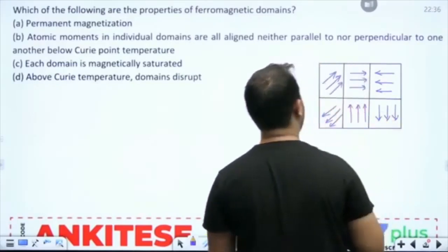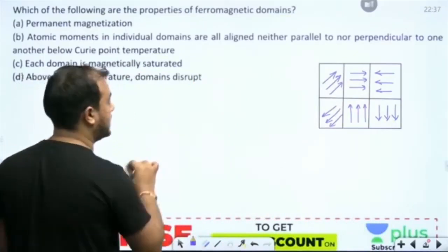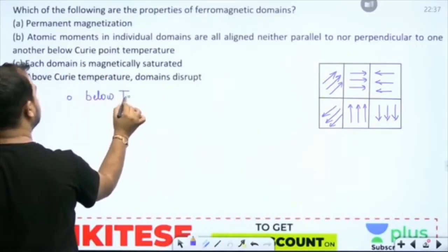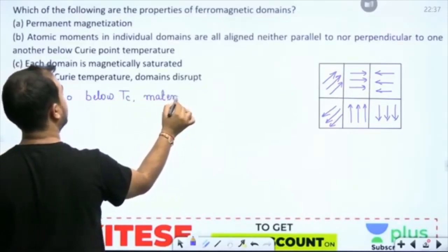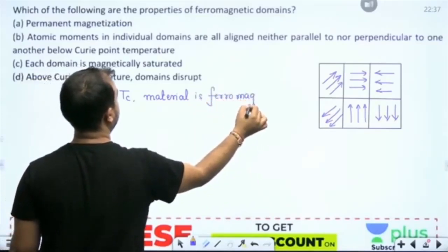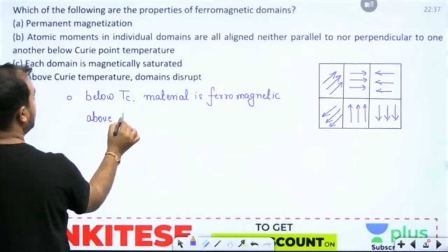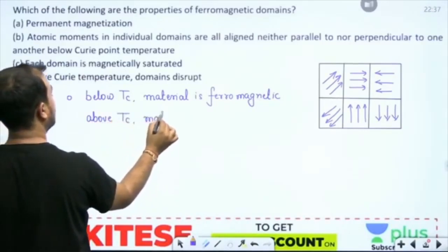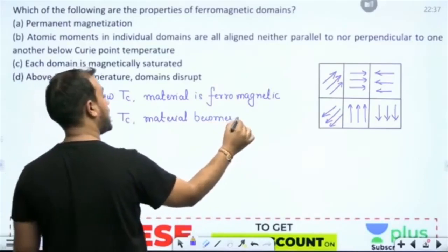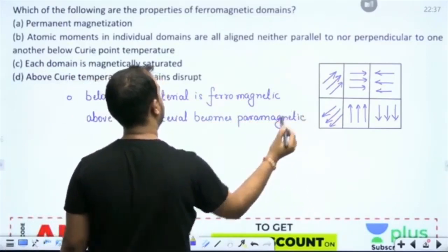In each domain, the dipoles are aligned. Now, I did not talk about the Curie's temperature in the lectures that I have uploaded. What about Curie's temperature? Below Curie's temperature, material is ferromagnetic, and above Curie's temperature, material becomes paramagnetic.